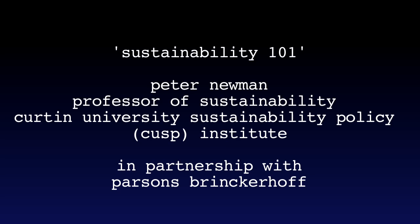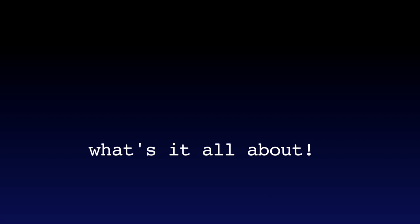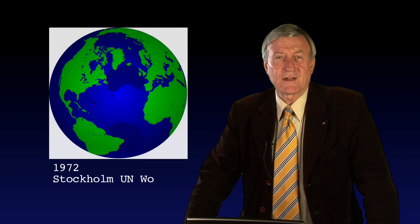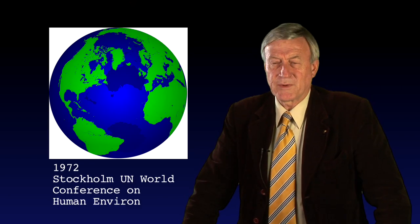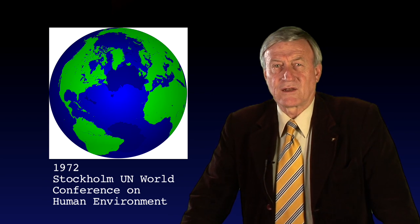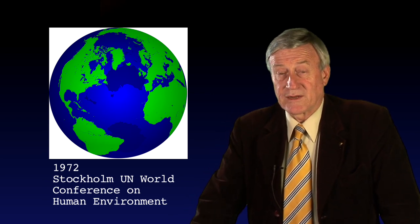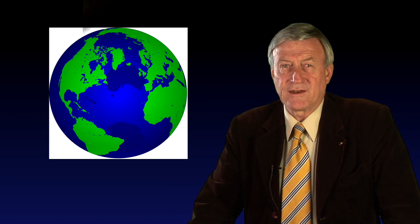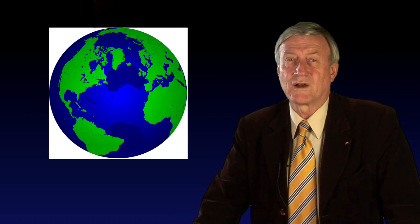What is sustainability about and how do we do it? Sustainability begins in the 70s when environmental protection and improvement was being established as a global process of government. It was very clearly needed. Environment had been neglected in economic development. It was clear we needed environmental protection agencies, environmental regulation, and assessment processes for all kinds of development, and that was being established across the world.